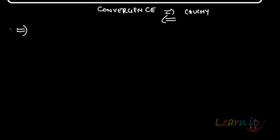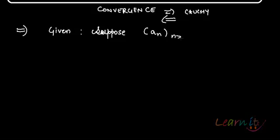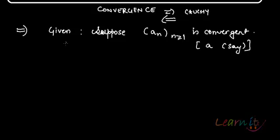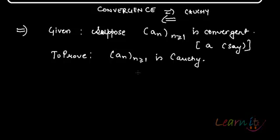Let's first try to prove this implication that convergence implies Cauchy. Suppose a_n is convergent, say to some limit a. We need to prove that a_n is Cauchy.